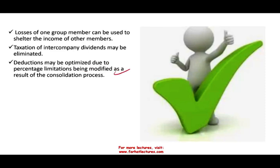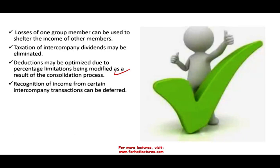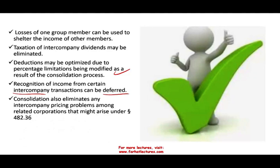Deductions may be optimized due to percentage limitations being modified as a result of the consolidated process. When you consolidate, your percentages go higher — for example, for charitable contributions you can take more deduction. Recognition of income from certain intercompany transactions might be deferred, so you can pay it later. Consolidation also eliminates intercompany pricing problems, which is basically transfer pricing among related corporations that might arise under Section 482.